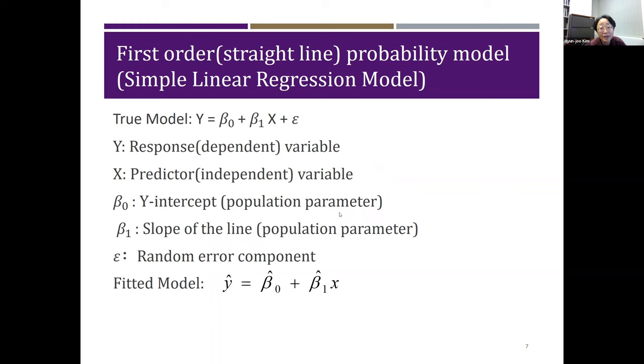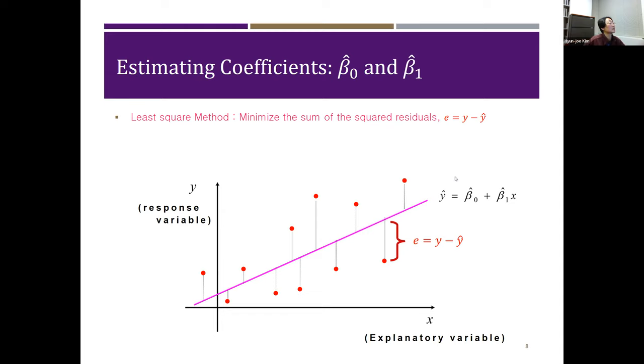With a sample, beta nought hat and beta 1 hat can be estimated. And Y can be also estimated using beta nought hat and beta 1 hat. The fitted model is y-hat equals beta nought hat plus beta 1 hat times X. This is your fitted model. This is your true model. We know that Y is response variable, X is predictor variable, beta nought and beta 1 are parameters, and we can estimate them based on our data.